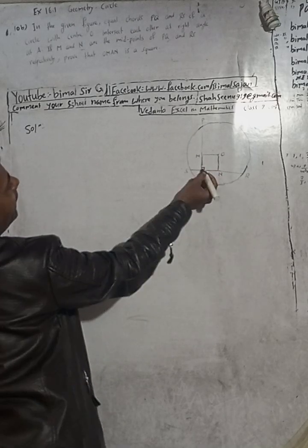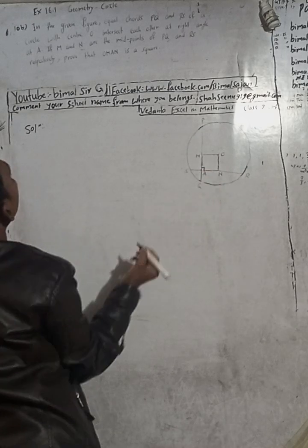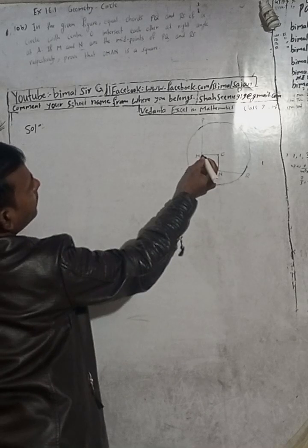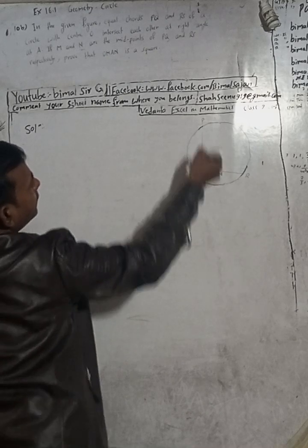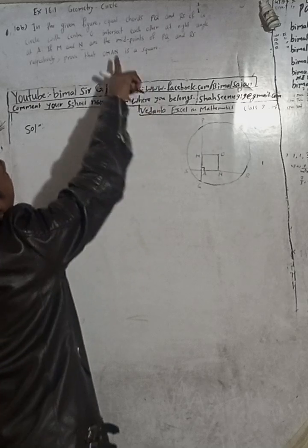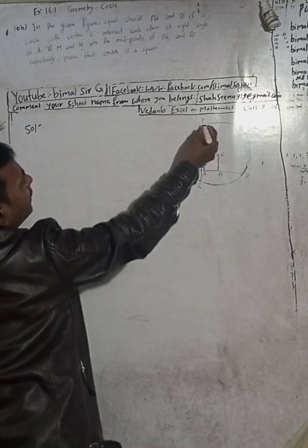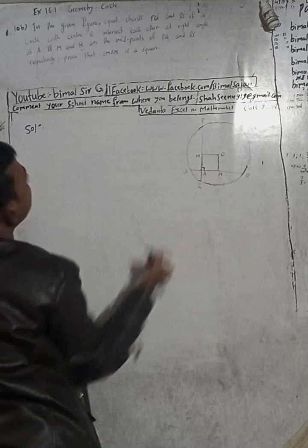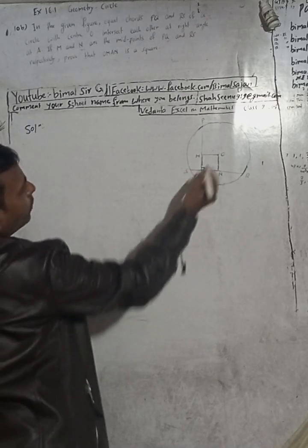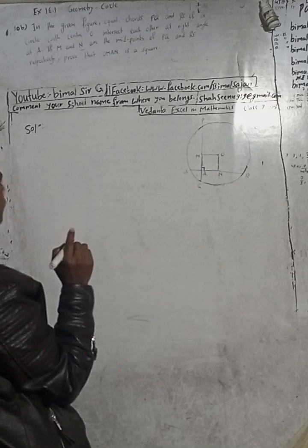They intersect at point A. M is the midpoint of PQ and N is the midpoint of RS, respectively. We have to prove that OMAN is a square.